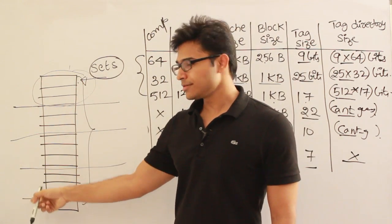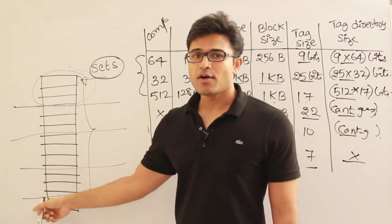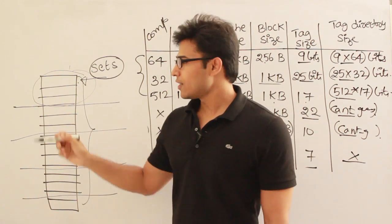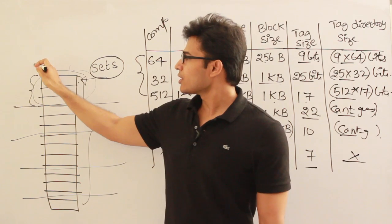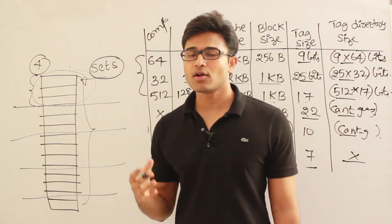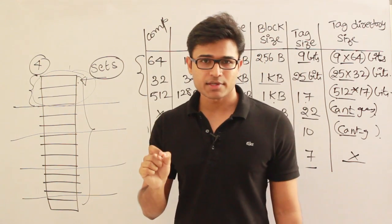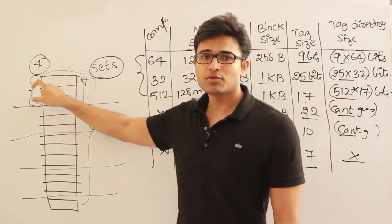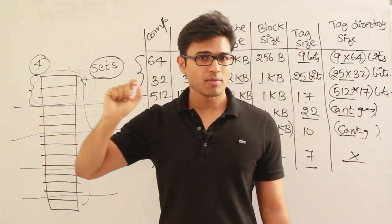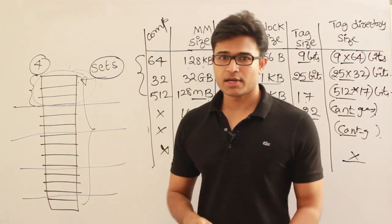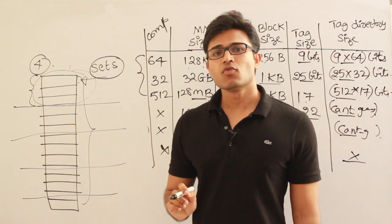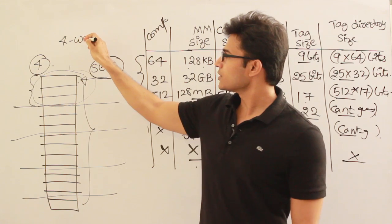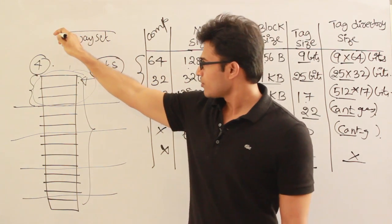In set-associative mapping, to find a block we only search within its assigned set. If each set contains four lines, only four comparators are needed instead of hundreds. This is called four-way set associative, and it offers a trade-off between the freedom of associative mapping and the low cost of direct mapping.